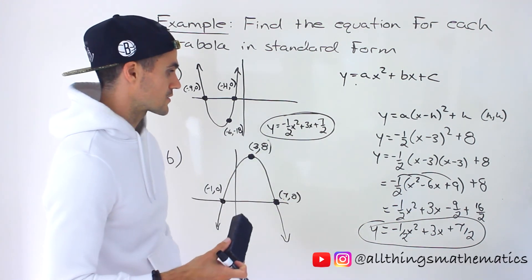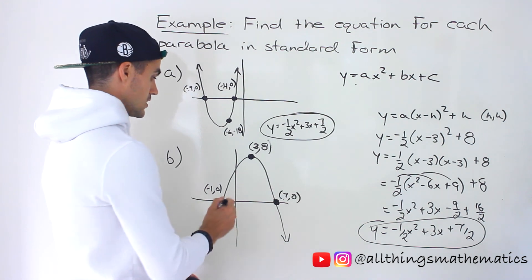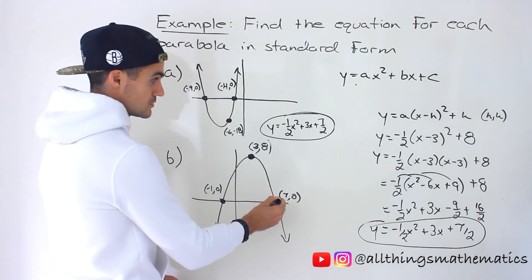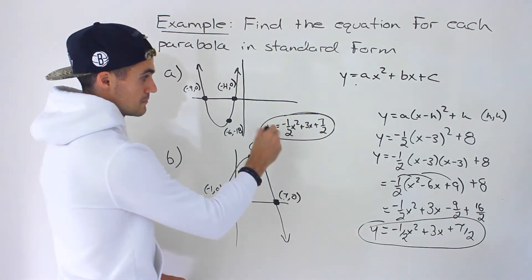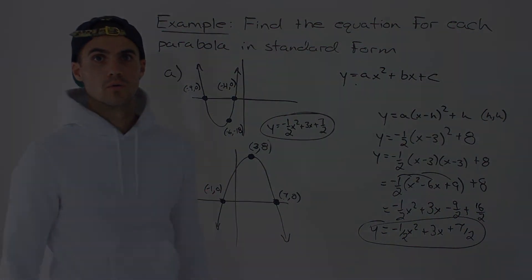We now have this parabola in three different formats: vertex form, factored form, and standard form. We got the standard form two different ways and got the same thing, so we can be confident that's the correct answer. If you want to check it, plug in all the x values and make sure you get the corresponding y values.